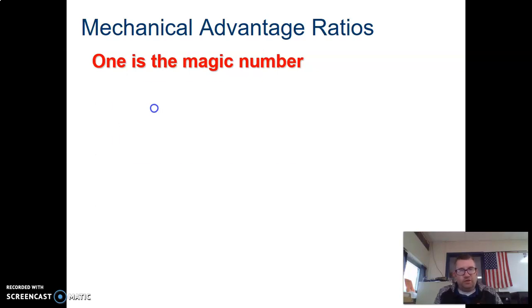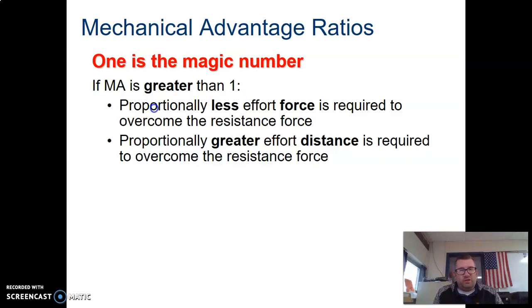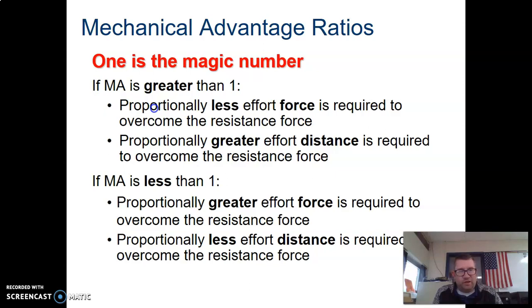One for the ratios is a magic number. If the mechanical advantage is greater than one, then you need less effort force to overcome the resistance, but you need that same proportion greater distance, so once again you're trading effort for resistance. Same thing if the MA is less than one, then you need a greater effort force in order to overcome the resistance, and then you need less distance to overcome the resistance force. Mechanical advantage can never be less than or equal to zero.